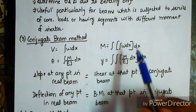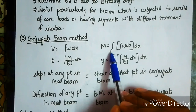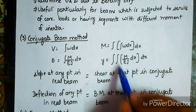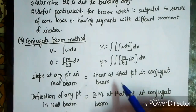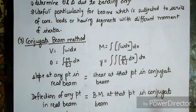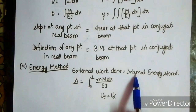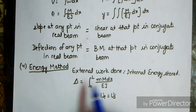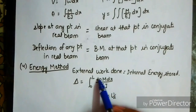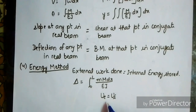The conjugate beam method: shear force equals integration of w dx and theta equals integration of M/EI dx; deflection equals double integration of M/EI dx dx. Slope at any point in the real beam equals shear at that point in the conjugate beam, and deflection at any point in the real beam equals bending moment at that point in the conjugate beam. The energy method: delta equals integral of m times M dx upon EI, where m is the moment due to unit load and M is the actual moment.